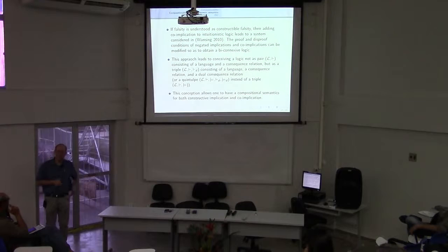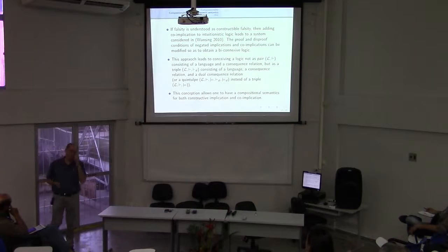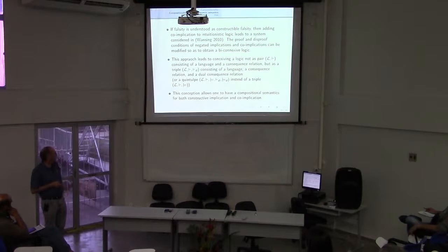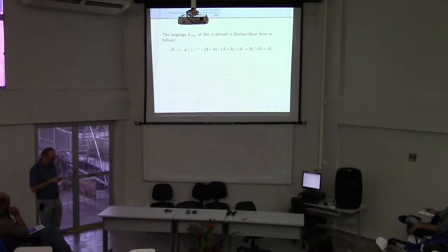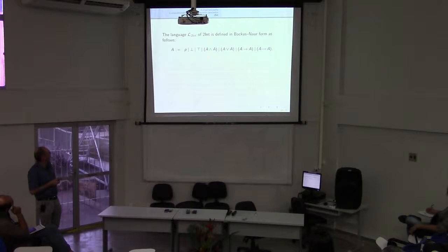Now I come to a part which is repetitive for some of you — I'm sorry for that. I want to be more concrete about obtaining a compositional semantics by distinguishing between proofs and dual proofs, verification and falsification. This is achieved in what I call two-intuitionistic logic. The language of the system has conjunction, disjunction, implication, falsity, truth, atoms, and now also co-implication. The co-implication connective is dual to intuitionistic implication in the sense of internalizing preservation of falsity from the premises to the conclusions.